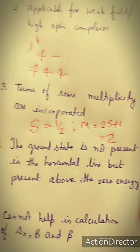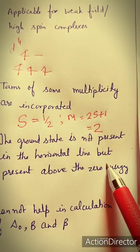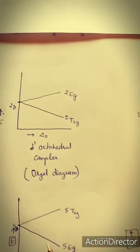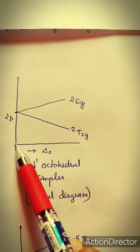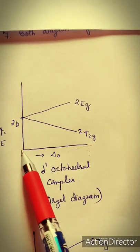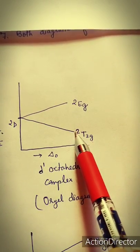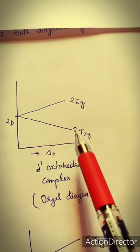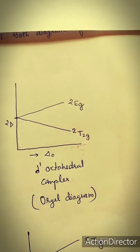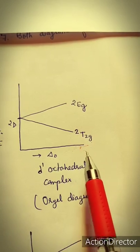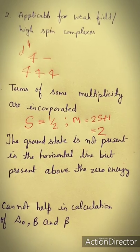Another characteristic is that in Orgel diagrams, the ground state is not placed on the horizontal line but is present above the zero energy level. The ground state term for the atomic state is positioned above this zero energy horizontal line. This is a key difference from Tanabe-Sugano diagrams, which we will see later.